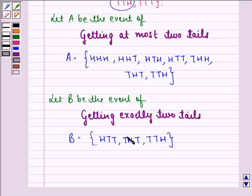Now, to see whether these 2 events are mutually exclusive or not, we consider A intersection B. Now, A intersection B will be all the elements that are common to both A and B.